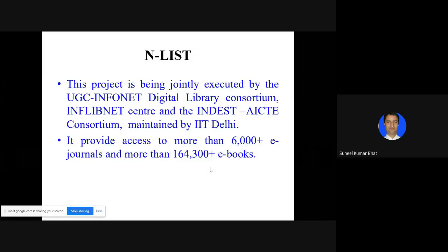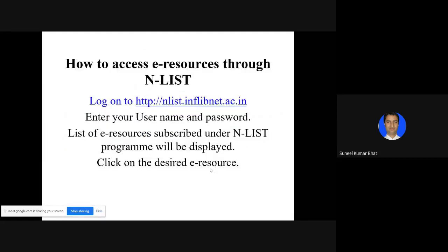ENLIST provides access to more than 6,000 e-journals and more than 1,64,000 plus e-books. You can access these books through ENLIST. You can write the ENLIST URL as inflibnet.ac.in and enter your username and password. The list of e-resources subscribed under the ENLIST program will be displayed.